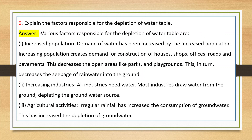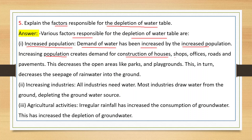Next: explain the factors responsible for the depletion of the water table. First factor: increased population. Demand for water has increased with population growth. Increasing population also creates demand for construction of houses, shops, offices, roads and pavements, which decreases open areas and in turn decreases the seepage of rainwater into the ground.